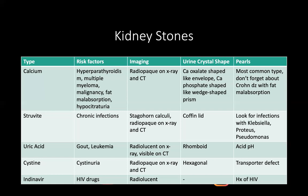Uric acid stones account for about 5% of cases. These are seen in hyperuricemic states like gout and increased cell turnover states like leukemia. Importantly, uric acid stones are not visible on X-ray, but they are visible on CT. They typically look rhomboid in shape and have acidic pH.